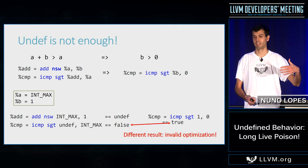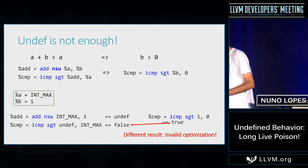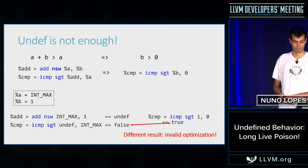We started by saying overflow is undefined behavior in C, translated that to NSW returning undef in LLVM IR, but then we cannot justify that this transformation is correct. That's why LLVM introduced poison: any instruction that receives poison as input returns poison, and we can justify the NSW transformation by saying that NSW returns poison on overflow.